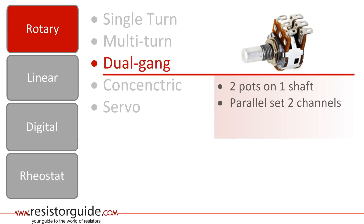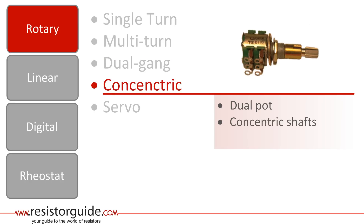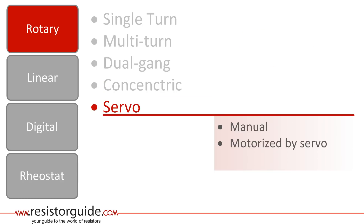The dual gang has two resistive elements connected to one shaft. In this way, two channels can be set at the same time. A concentric pot is also a dual pot, but has two concentric shafts. Both pots can therefore be adjusted separately. A servo pot is motorized, and can be actuated by a motor, and usually also by hand.